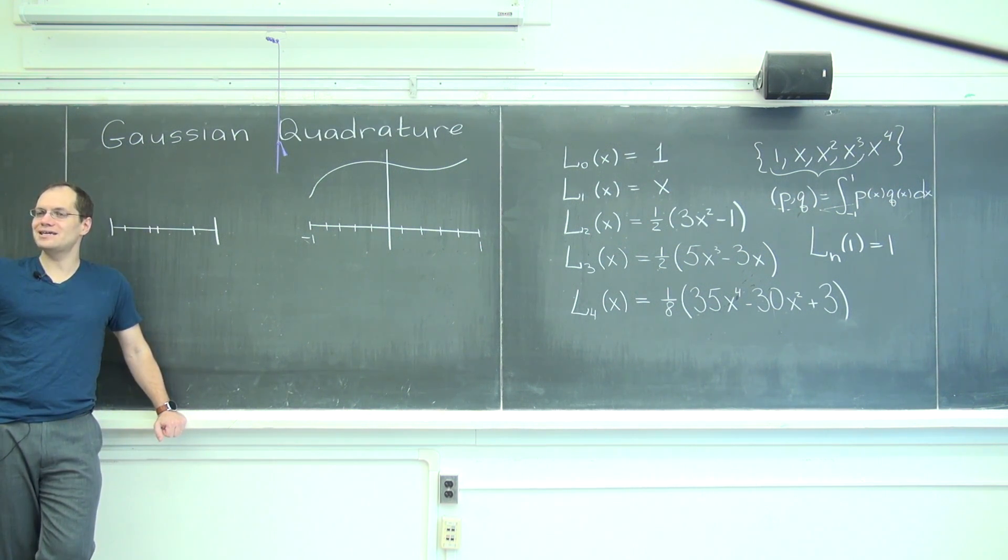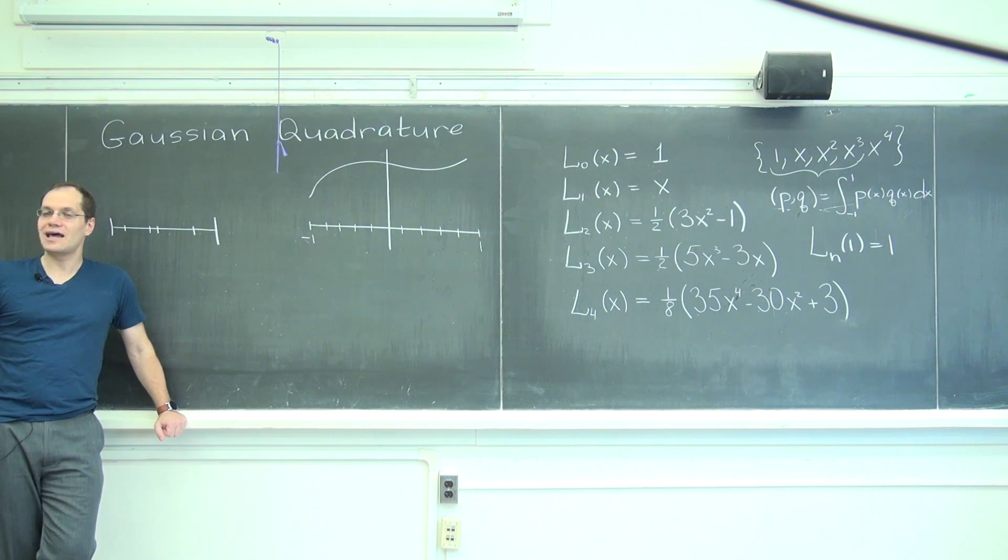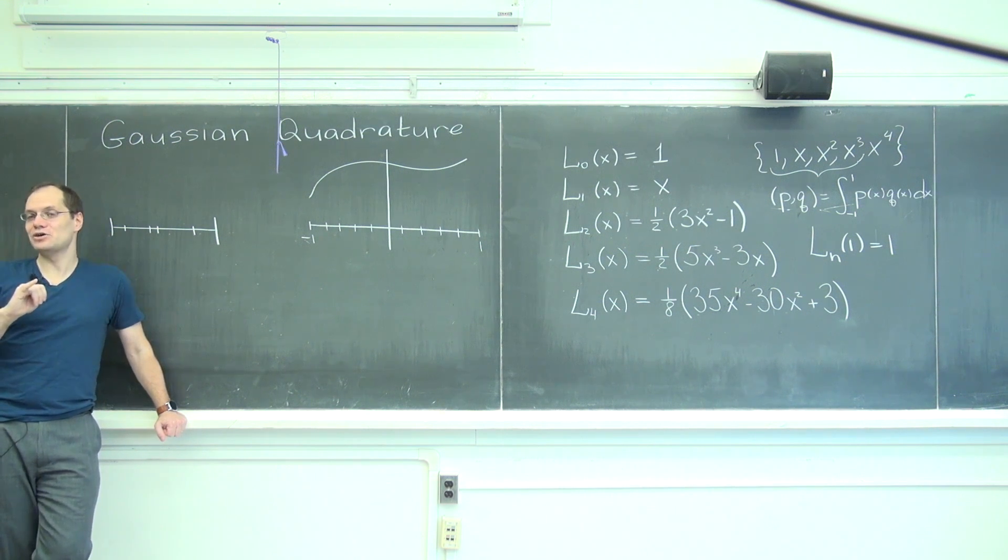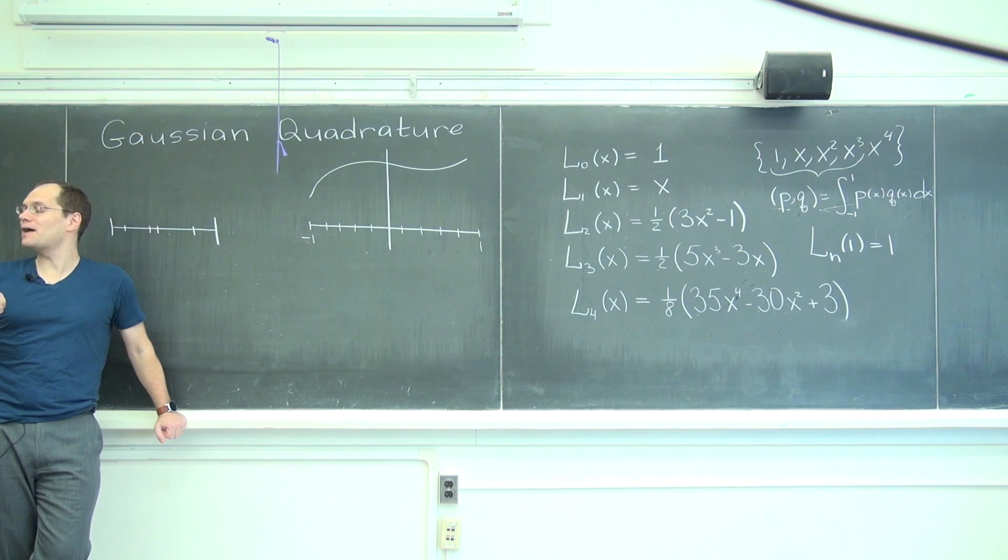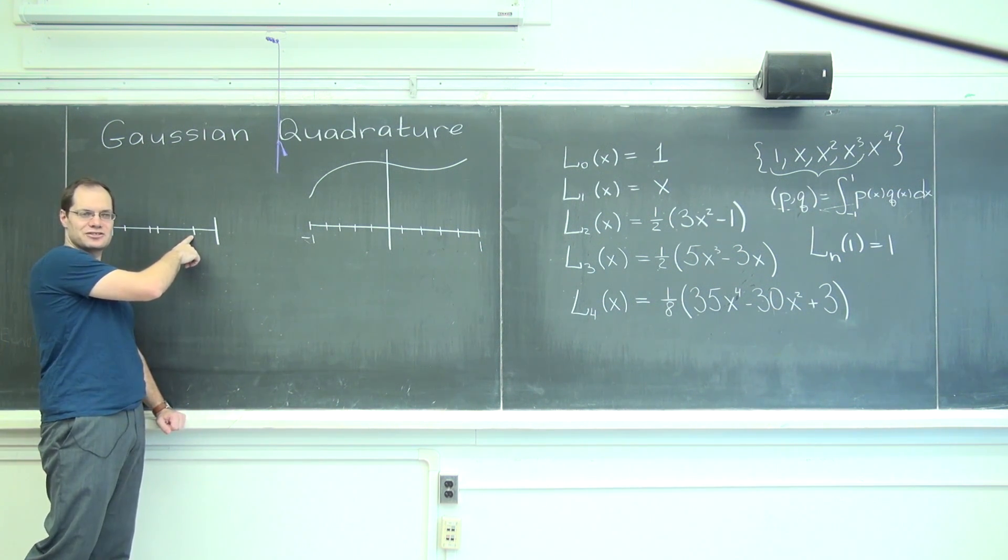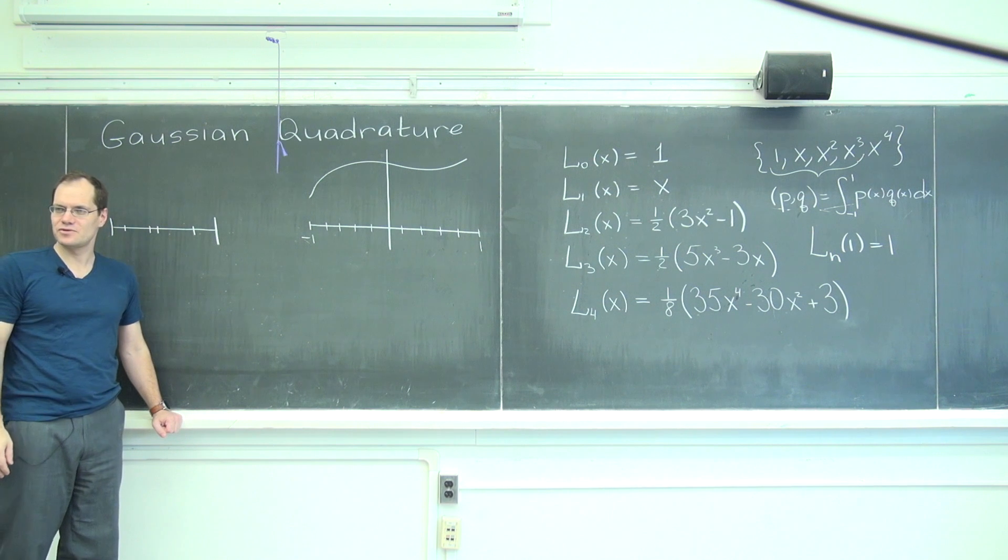The value would be exact. And then any other function by this scheme would be integrated only as accurately as it could be represented by a cubic polynomial. And cubic polynomials are pretty flexible, so it would already be not bad. Notice how I didn't choose these points intelligently. I chose them randomly.